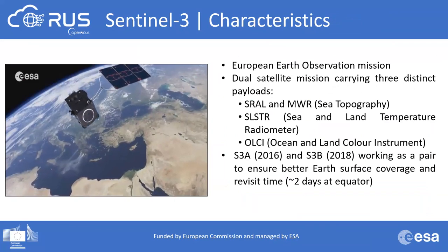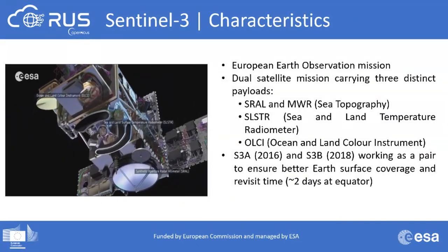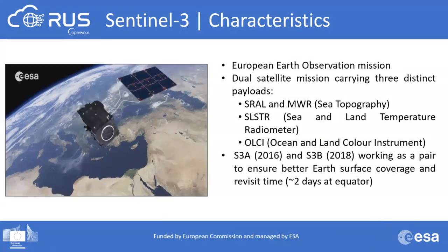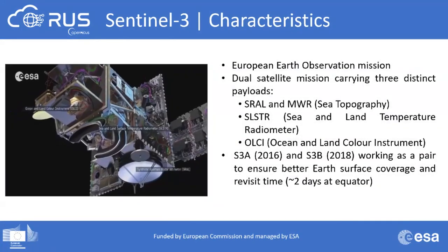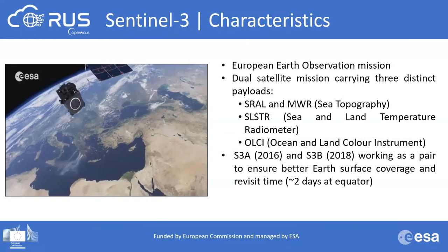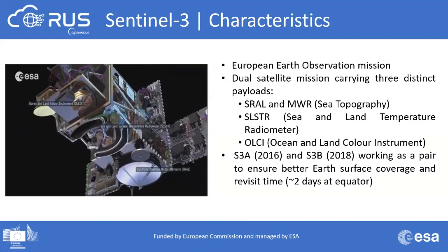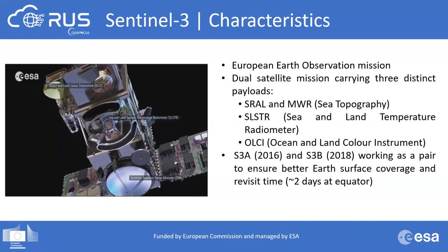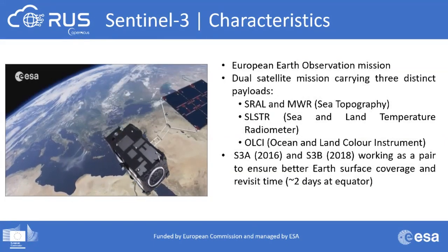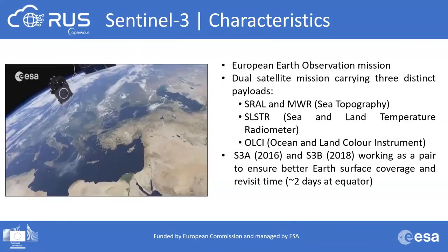Sentinel-3 is a European Earth observation mission — a dual satellite mission carrying three distinct payloads: SRAL and MWR to quantify sea topography; SLSTR, the sea and land temperature radiometer; and OLCI, the ocean and land color instrument. This is a constellation of two satellites: Sentinel-3A launched in 2016 and Sentinel-3B launched in 2018, working as a pair to ensure better Earth surface coverage and revisit time.